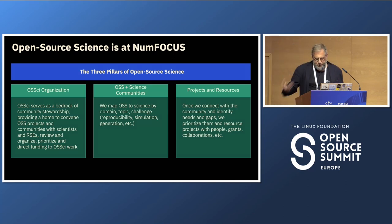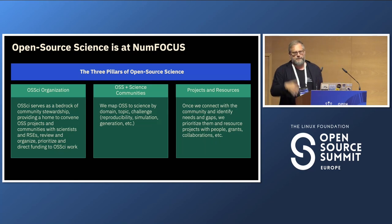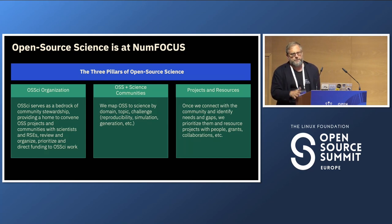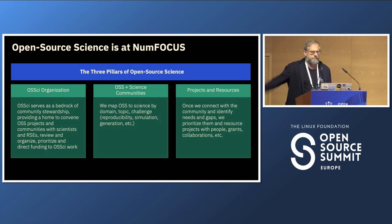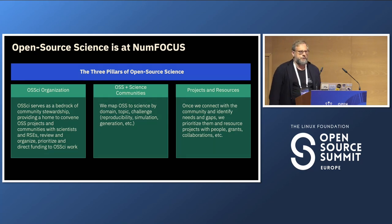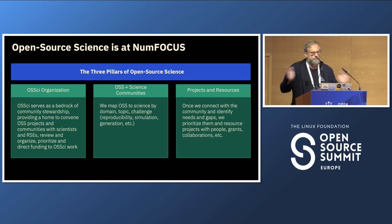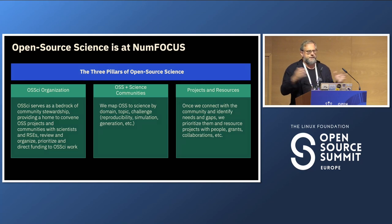All of you generally know the projects which sit under NumFocus — but nobody knows they are under NumFocus. It's a non-profit set up by Travis Oliphant to host NumPy. NumPy is the most installed open source project of all time according to some metrics — it's the foundation of any data science library in Python. Over the years there are about 80 different projects including Scikit-Learn and Pandas.